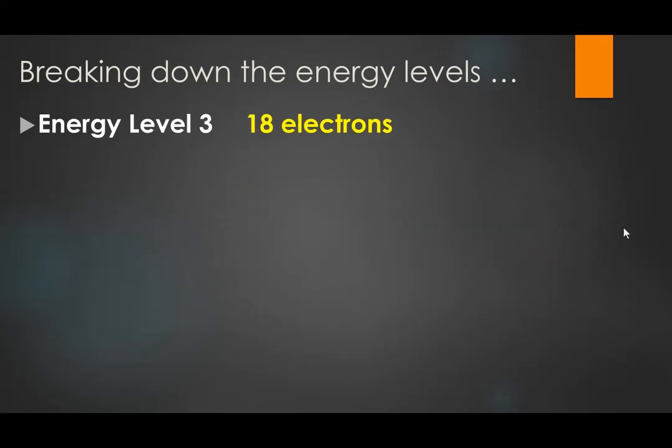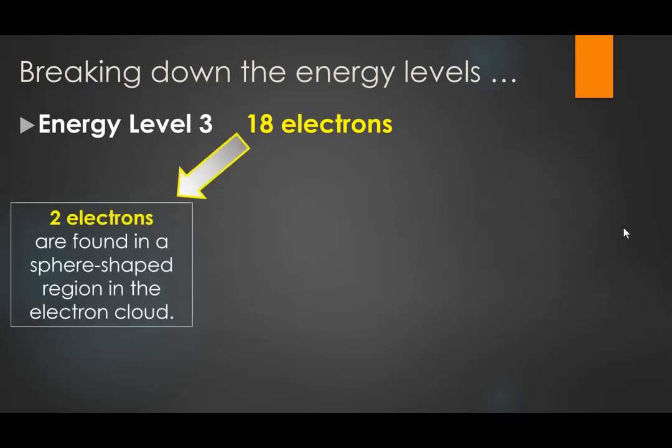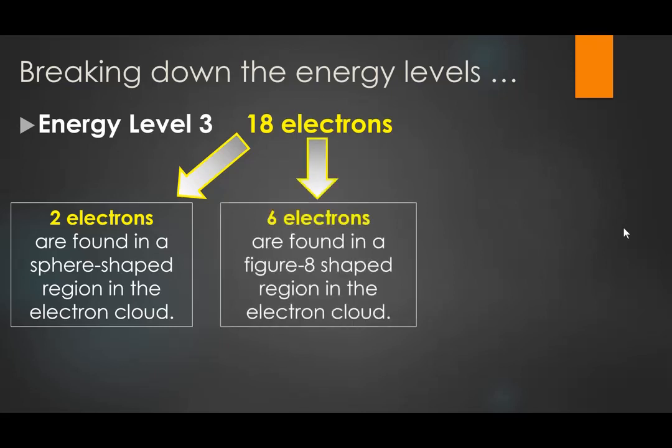For level 3 we build on those ideas. The first 2 electrons are still found in a sphere, just further out. Then 6 electrons are found in figure-8 shapes, again a little further out. But what about the other 10? We find those in level 3 in a cloverleaf-shaped region — a 4-leaf clover shape that's three-dimensional. Imagine a double hourglass, with 2 hourglasses perpendicular to each other, giving a 4-lobed 3D shape.